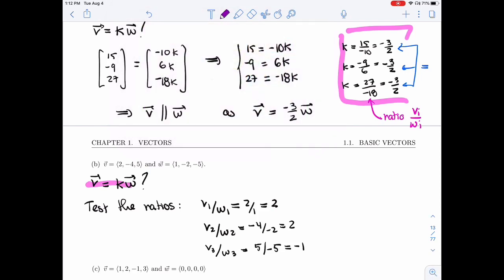So if those three numbers, those three ratios are the same, they're parallel, as soon as one is different, then V is not parallel to W.